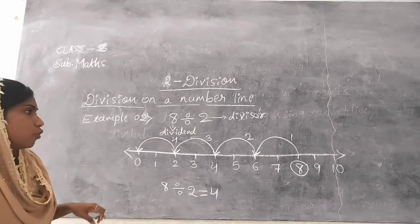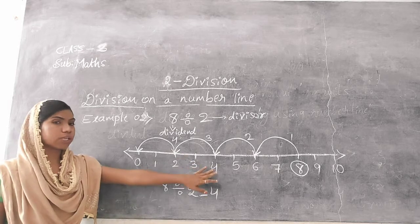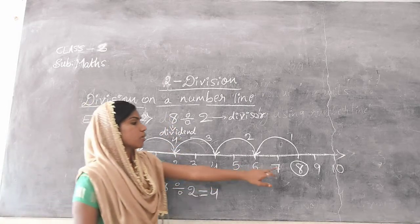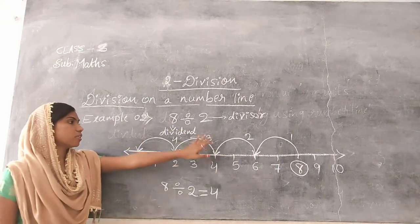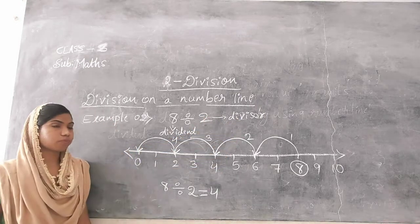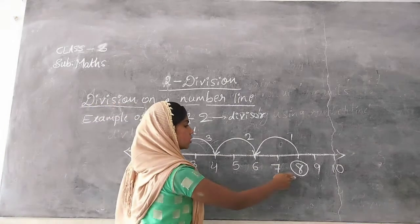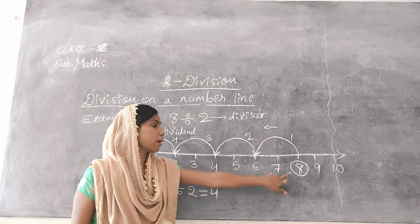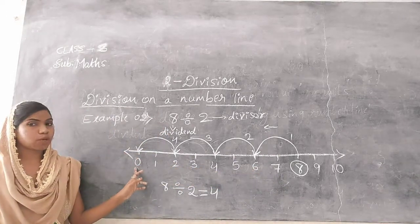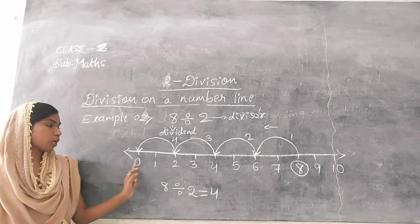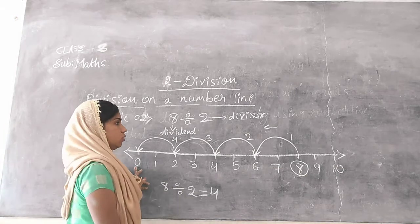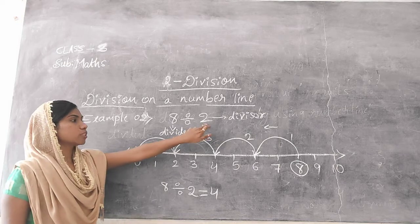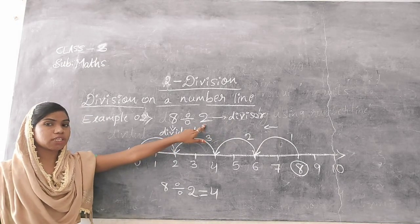So this is how we can divide by using a number line. First, we draw a number line. In the given division, 8 is the dividend, so we find number 8 on the number line. And 2 is the divisor. From 8, jump towards the left side, taking 2 steps in each jump, until you reach 0. The divisor tells how many steps to take in each jump.